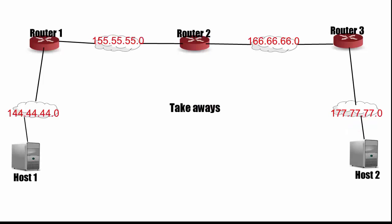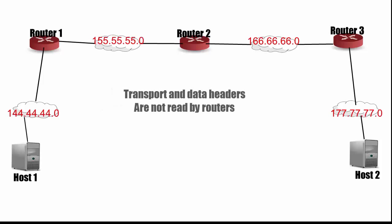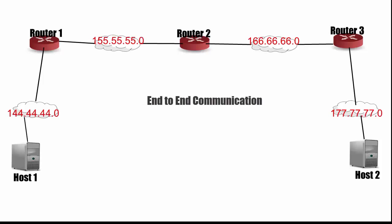The key takeaways: as the frame goes from router to router, only the frame header changes. The IP header is looked at, but never changes. The transport header and the data are never even looked at by the routers. The transport layer, along with the application layer, is called the end-to-end layers, because they are only looked at by the endpoint hosts. But the network layer, the data link layer, and the physical layer are called host-to-host, because these layers are looked at — although not necessarily changed — by every host along the way.